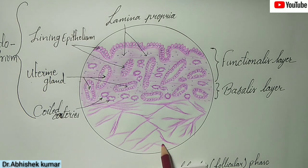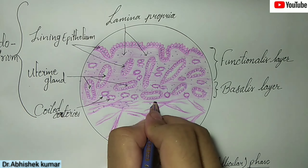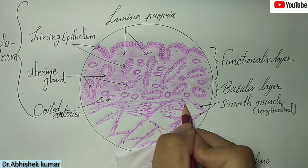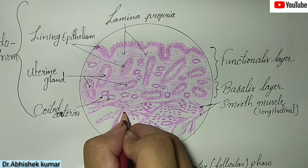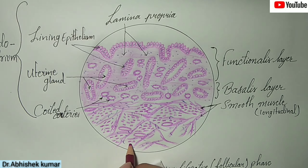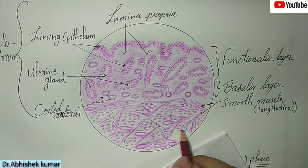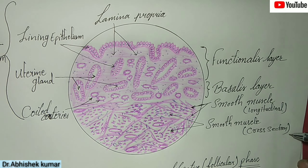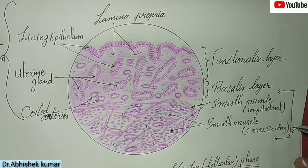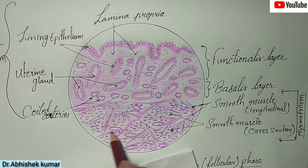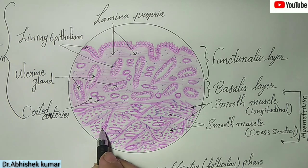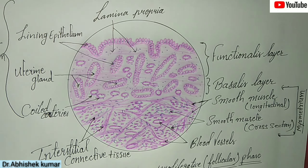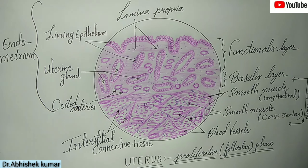Here is the smooth muscle — this is a longitudinal section of smooth muscle, and this is also smooth muscle with blood vessels. This one is a cross-section of smooth muscle. The smooth muscle in both cross-section and longitudinal section is known as the myometrium. These two layers are separated by interstitial connective tissue, and here are the blood vessels. Thank you — please like, subscribe, and share this video with your friends.